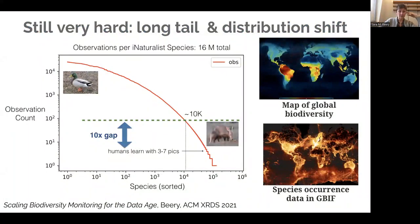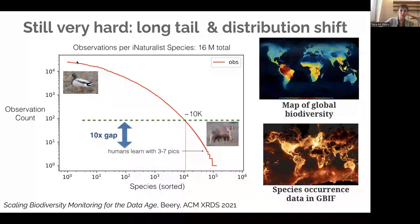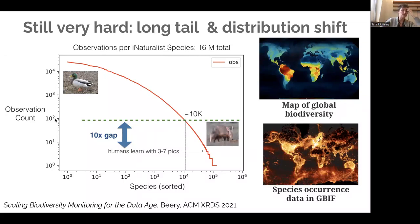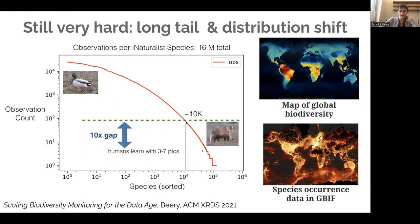The long tail is one of the biggest open challenges in machine learning. This is exacerbated by distribution shift. Looking at the distribution of observations in iNaturalist from the first 16 million observations — now there's an order of magnitude more — if you assume you need around 100 examples for a machine learning model to learn something accurately, there were at that point maybe 10,000 species over that threshold. But there's an order of magnitude more species in the low-shot regime in the long tail that machine learning models are still unable to identify. There's about a 10x gap between how many examples a machine learning model needs versus a human — a human can learn to identify a new species with maybe three to seven examples.